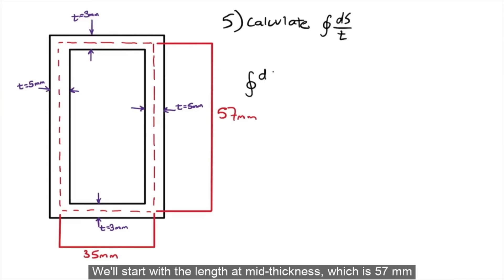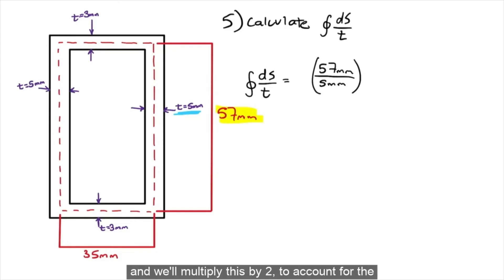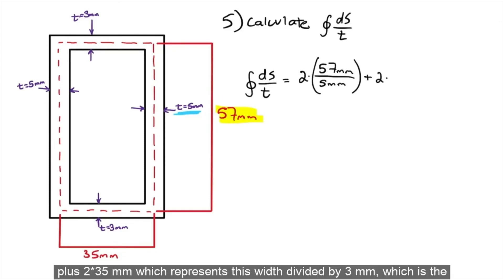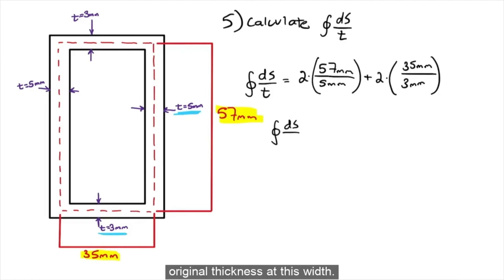We'll start with the length at mid thickness, which is 57 millimeters, divided by the thickness of the original section, which is 5 millimeters. And, we'll multiply this by 2 to account for the length on the left, plus 2 times 35 millimeters, which represents this width, divided by 3 millimeters, which is the original thickness at this width. We'll end up with a value equals to 46.13.